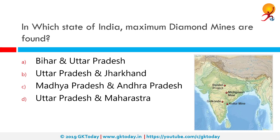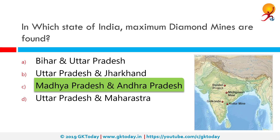In which state of India are maximum diamond mines found? The correct answer is Madhya Pradesh and Andhra Pradesh. India has one active diamond mine at Panna in Madhya Pradesh, run by the state-owned National Mineral Development Corporation. De Beers India is also prospecting in Madhya Pradesh, Chhattisgarh, Karnataka, Andhra Pradesh and Tamil Nadu for diamonds.